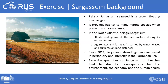Pelagic Sargassum seaweed is a large brown alga floating at the ocean surface thanks to its gas-filled bladders. When present in reasonable amounts, it provides a safe habitat to many marine species such as the threatened loggerhead sea turtle. Species like Mahi Mahi, Jacks, and Amber Jacks also use this floating vegetation as a nursery. In the North Atlantic, pelagic Sargassum floats and grows at the sea surface during its entire lifetime, aggregating and forming mats carried by winds, waves, and currents over very long distances.